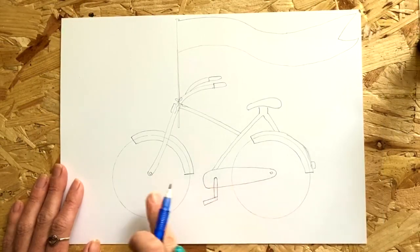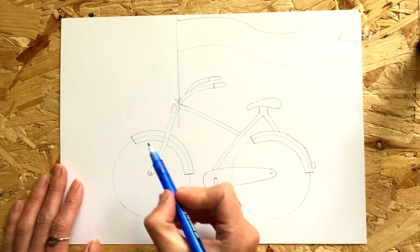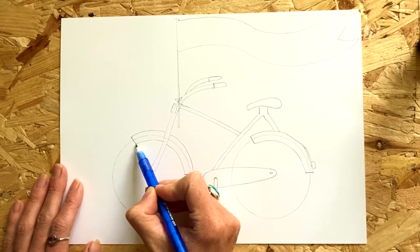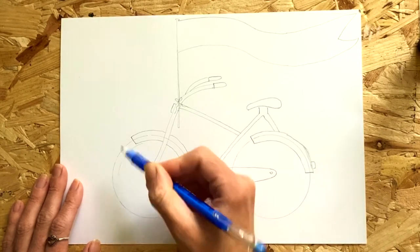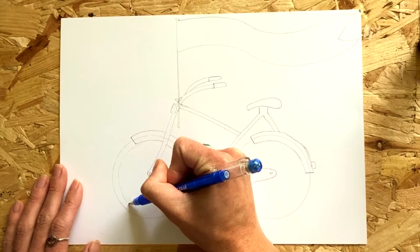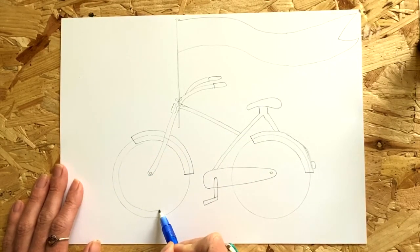It's now time to add your mandalas into your bicycle wheels. So starting off on one of your circles you're going to draw another circle slightly smaller inside the outer circle.